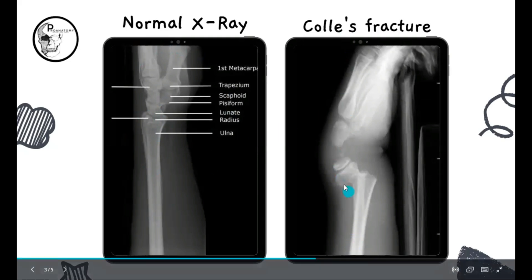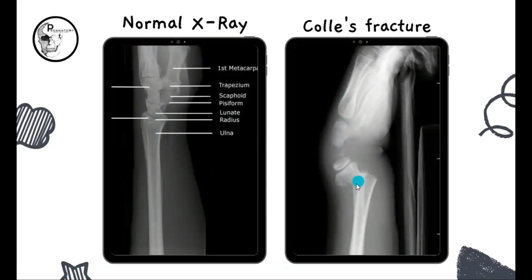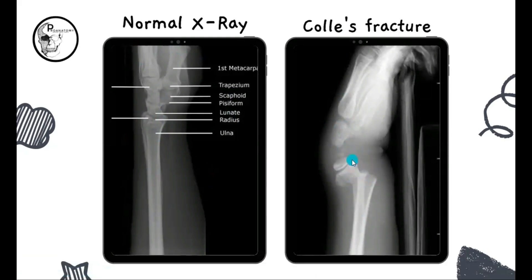Now let's compare it with a Colles fracture X-ray. Here you can see the carpal bones are slightly displaced. And here you can see the lower end of radius is fractured almost 2.5 centimeters from the end. This is the distal end of the radius, and almost 2.5 centimeters above from there, there is a fracture and the fractured fragment is displaced backwards. That is the typical presentation of the Colles fracture.